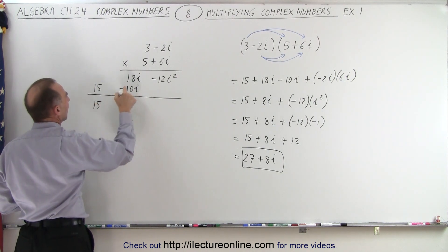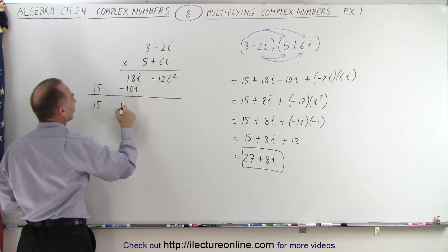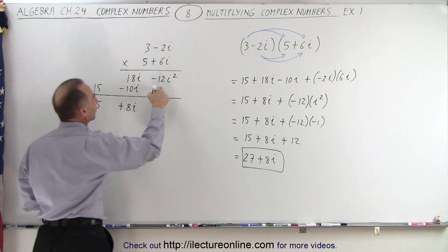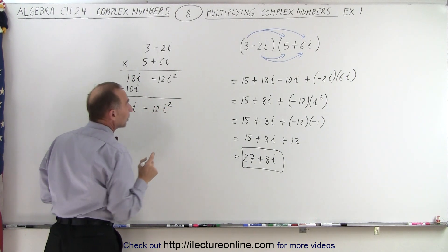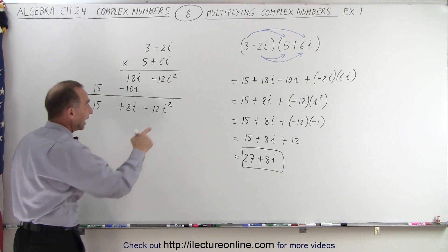On the left side, we get 15 plus 18 minus 10 gives us plus 8i. And over here, we get a minus 12i squared. But then we realize that i squared is a negative 1.